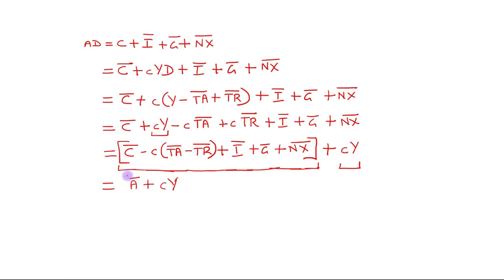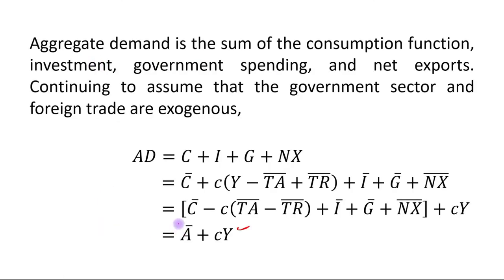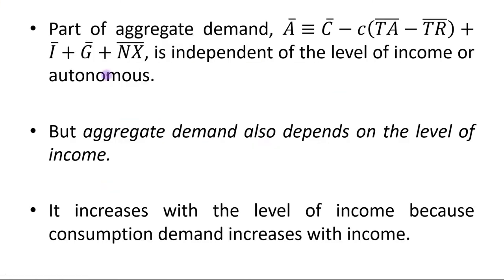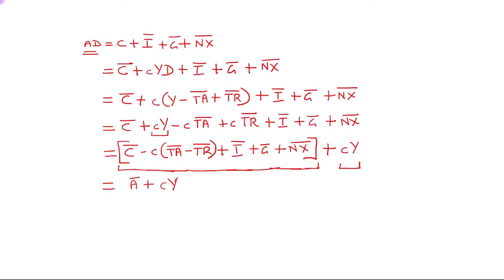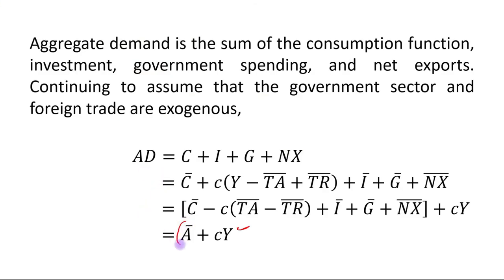So this Ā is the autonomous part of aggregate demand. You can see that we have derived this result: the part of aggregate demand denoted Ā is independent of the level of income — it is autonomous. This portion is the autonomous aggregate demand, because it does not depend on the level of income.